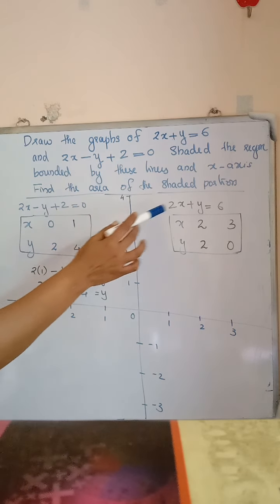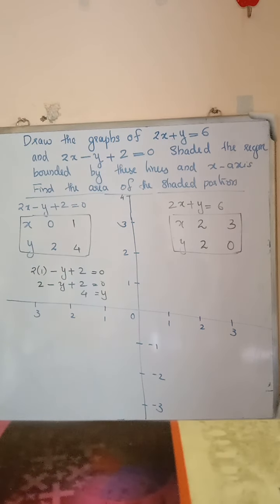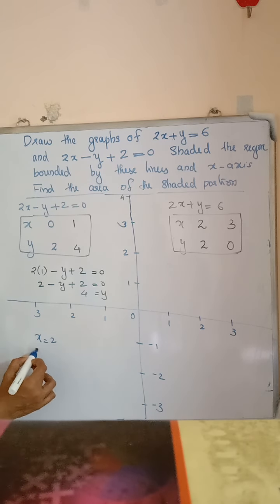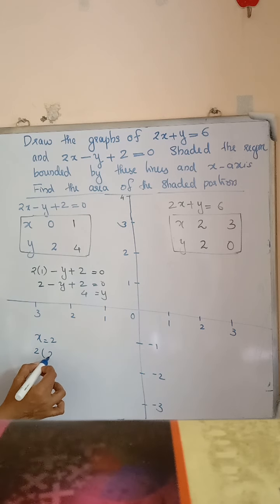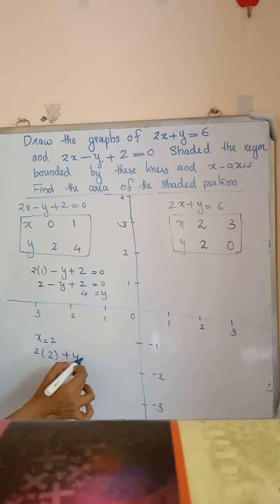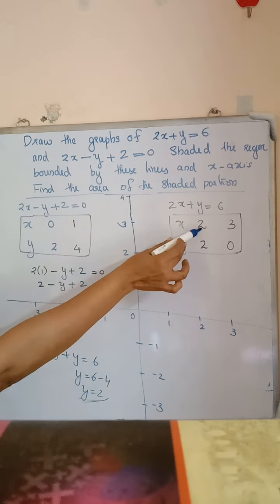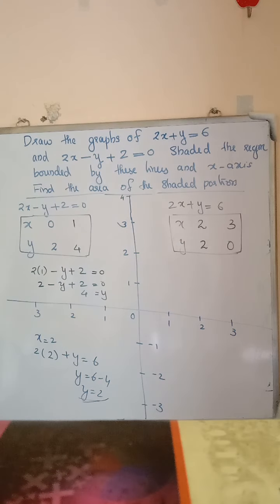For the first equation, 2x plus y is equal to 6. If we choose x is equal to 2, we get 2 into 2 plus y equals 6. That is y is equal to 2. So, when x is equal to 2, then y is equal to 2.